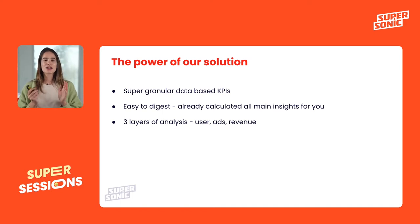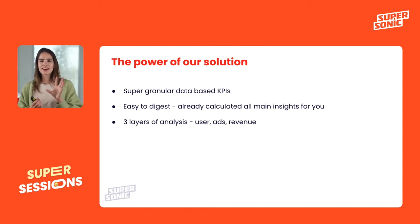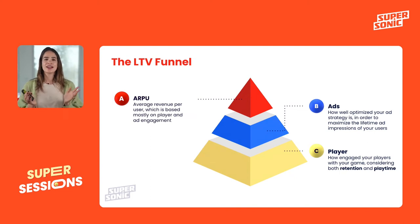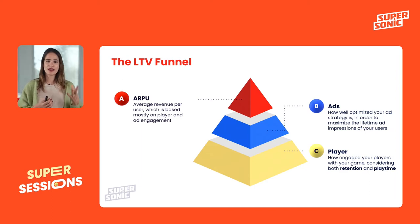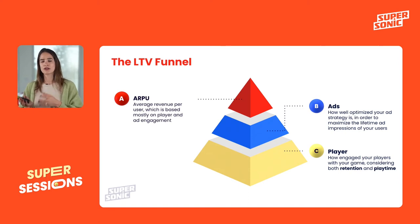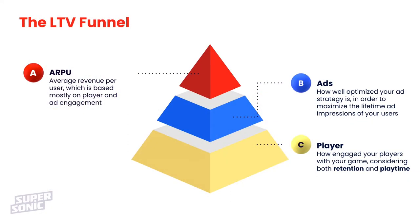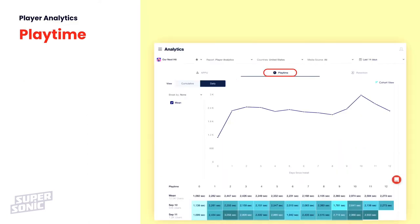The power of our solution is a super granular KPI dashboard — easy to digest, with all main insights already calculated — and it covers all three layers of analysis: the user, the ads, and the revenue. The live game solution holds the whole LTV funnel, starting from player engagement (retention and playtime), ads engagement (mostly impressions from interstitial and rewarded video), and of course ARPU at the top of the pyramid, which contains player ad and ad engagement.